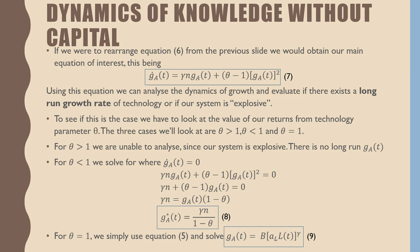To see if this is the case, we have to look at the value of our returns from technology parameter θ. The three cases which we'll look at are θ > 1, θ < 1, and θ = 1. For θ > 1, we are unable to analyze since our system is explosive—there is no long-run growth rate of technology.